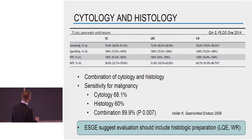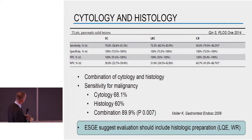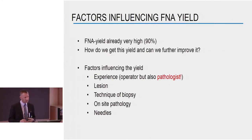In one study of 72 patients with pancreatic solid lesions, all three types of preparations — smear, liquid biopsy, and cell block — were produced. Cell block sensitivity was greater than smear alone. In this particular study, combining cell block and smear didn't improve further, but in another study, combining cytology and histology from a cell block gave a better result. So it makes sense to aim to get both cytology and histology out of a cell block when doing fine needle aspiration, and that is also what is recommended.